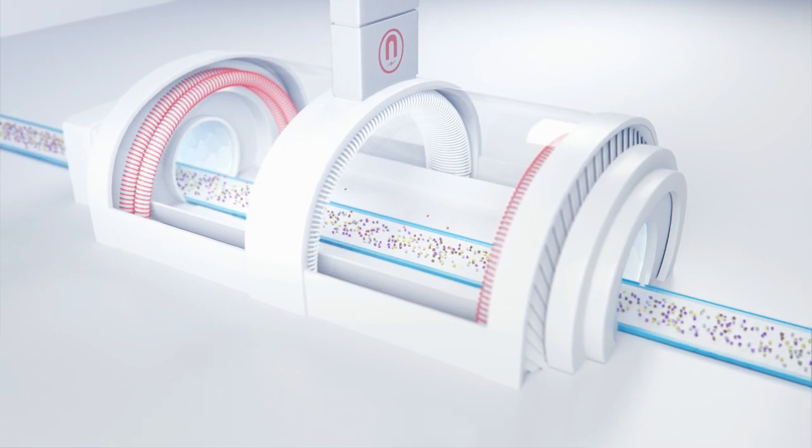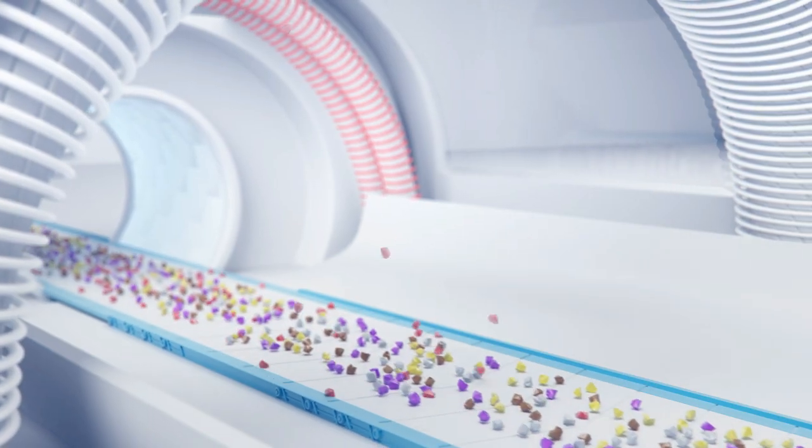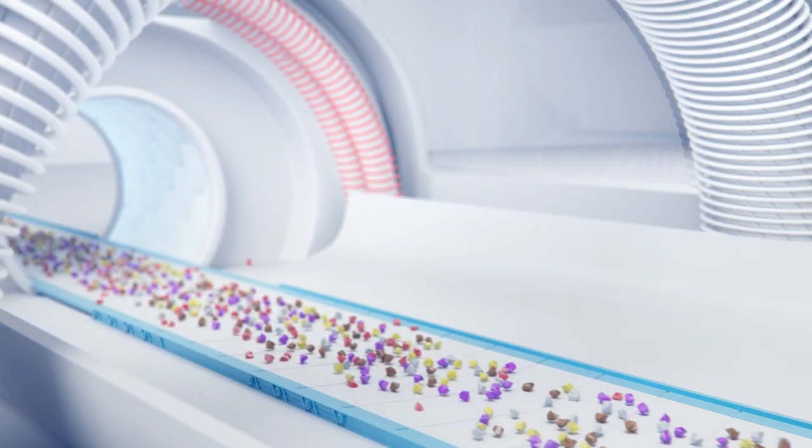Powerful magnets remove ferrous metals such as iron and steel from the components. These metal particles can be used again immediately as new raw materials.